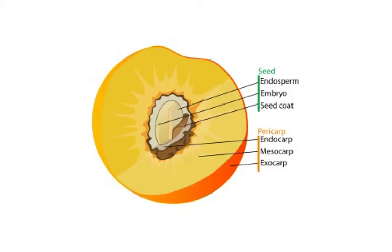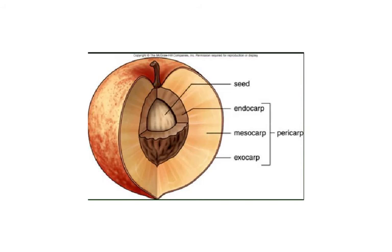Another diagram shows the seed, endosperm, seed coat, and pericarp. The pericarp is made of three layers: the exocarp, the mesocarp, and the endocarp. The mesocarp is the fleshy part — for example, when you eat a mango you are eating the mesocarp and then throw away the seed. Together these three layers form the pericarp, which is the fruit wall.